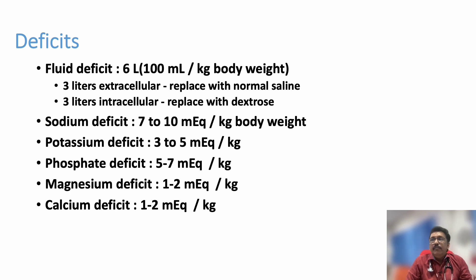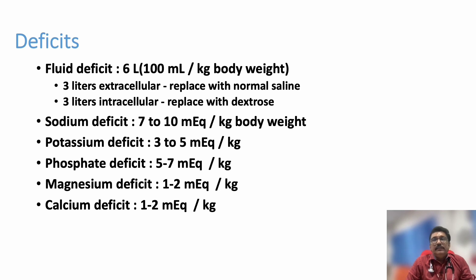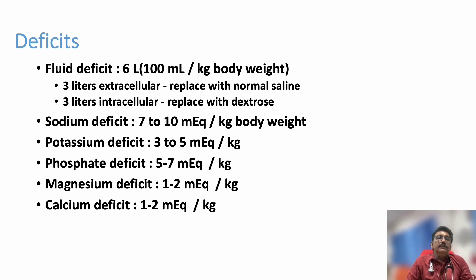Potassium deficit is very important. Before starting insulin, check the potassium level — if there is hypokalemia and you start insulin, further hypokalemia can occur due to a shift mechanism, which must be avoided. Phosphate is also often deficient. Magnesium is critical because it is required for insulin action and helps prevent potassium loss — magnesium is as important as potassium in DKA. Calcium deficit can also occur.